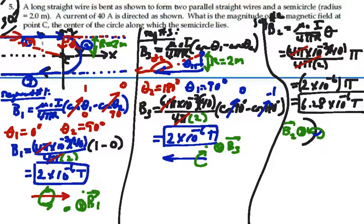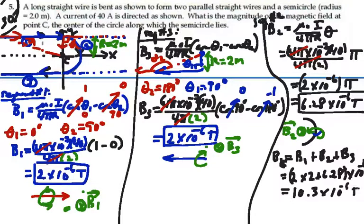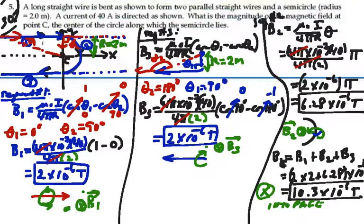All three fields are directed into the page, so the net field at C is B1 plus B2 plus B3, equal to 2 plus 6.28 plus 2, all times 10 to the minus 6, giving 10.3 times 10 to the minus 6 Tesla — that is, 10.3 micro-Tesla, into the page at point C.